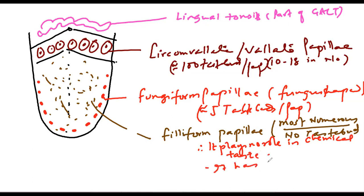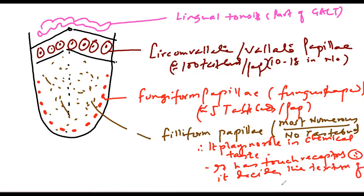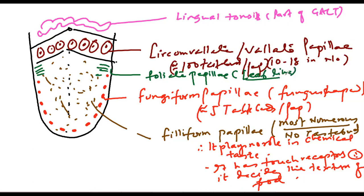Filiform papillae have no taste buds and therefore play no role in chemical taste. However, they have touch receptors, so they decide the texture of food — whether it is smooth, rough, or coarse. That is the concept of our tongue.